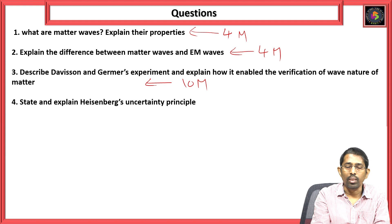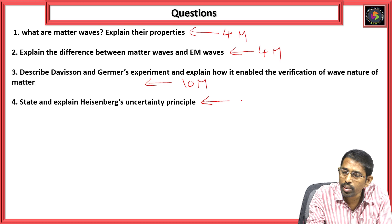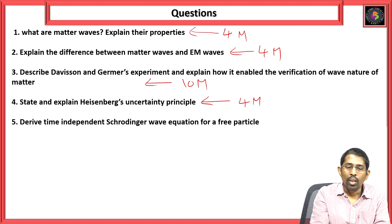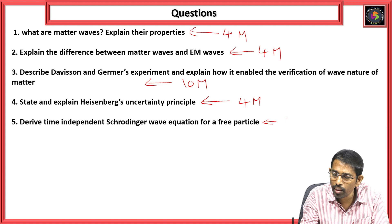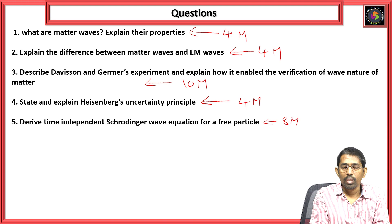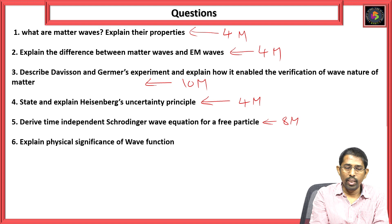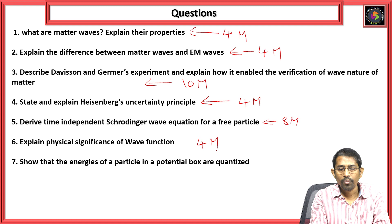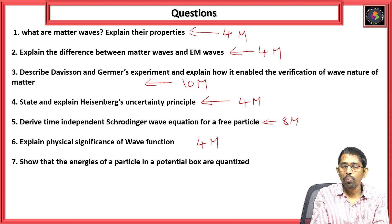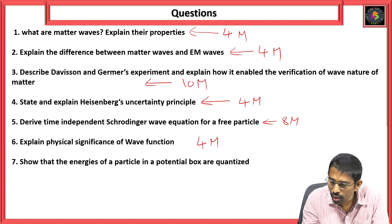Another question: state and explain the Heisenberg uncertainty principle (4 marks). Next: derive the time-independent Schrödinger wave equation for a free particle (8 marks). Then: explain the physical significance of wave function (4 marks). Finally: show that energies of the particle in a potential box are quantized (8 marks).